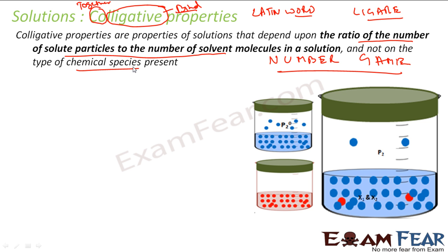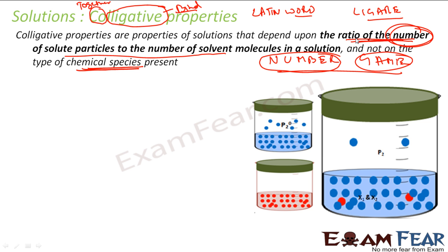For example, an election in any country is a number game. Who is voting doesn't matter — whether it's an engineer, doctor, or any other profession, it doesn't matter. The one who gets the maximum votes is the winner. Same thing here — it doesn't matter what the quality of the solute is or how it reacts. It doesn't care about the chemical composition of the solute or solvent. It's just the ratio of solute particles to solvent particles.